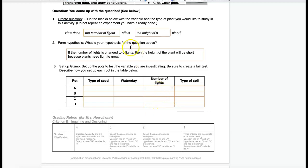For example, I know that my IV is the number of lights, that's what I'm changing. So I'm going to change this to pot A will be zero, pot B is one light, pot C is two lights, and pot D is three lights.